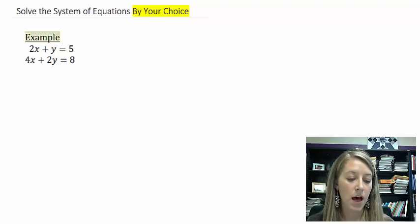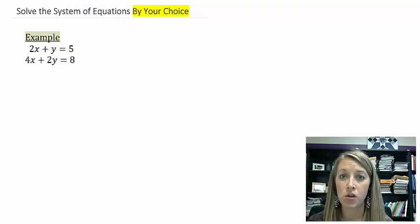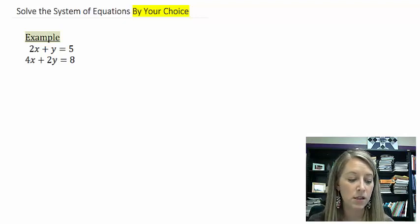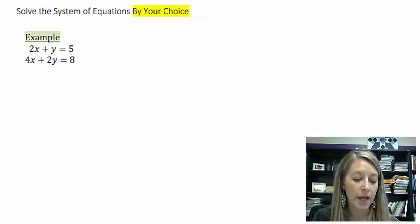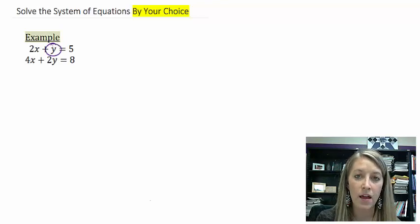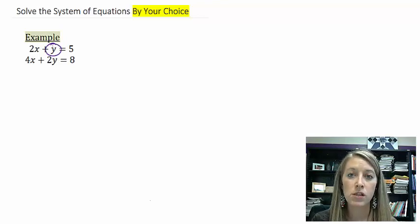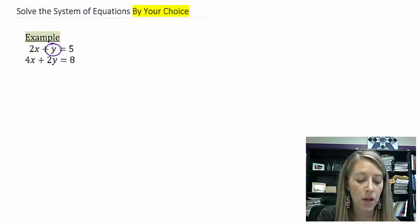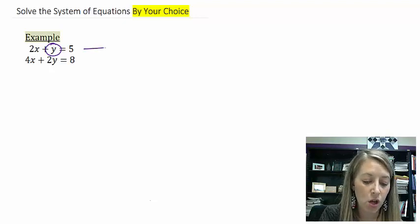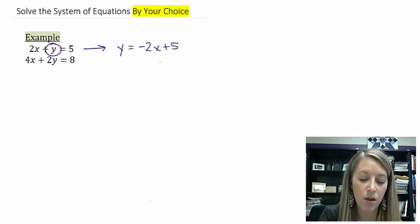I'm going to do this one by substitution, just so you see an equal amount of examples of both methods. I do see a single y variable here, so that's most likely going to be the easiest to solve for. So if I solve for that, that gives me y is equal to negative 2x plus 5.